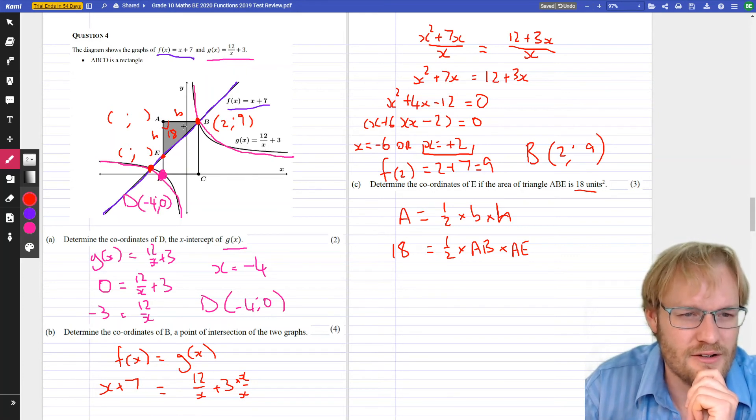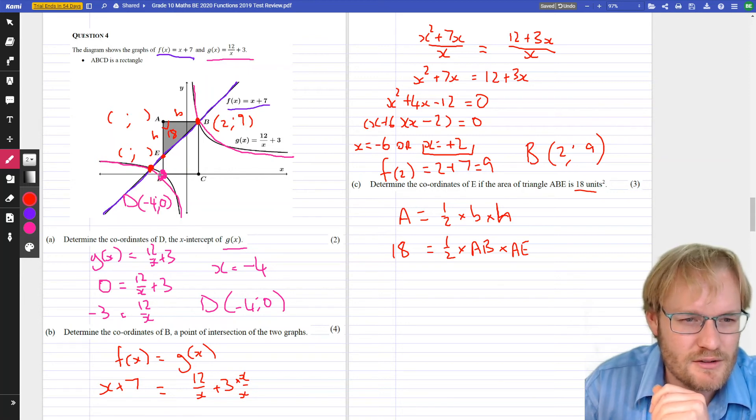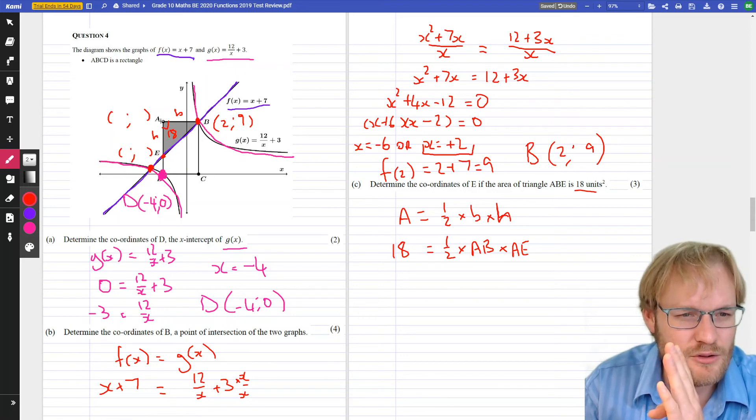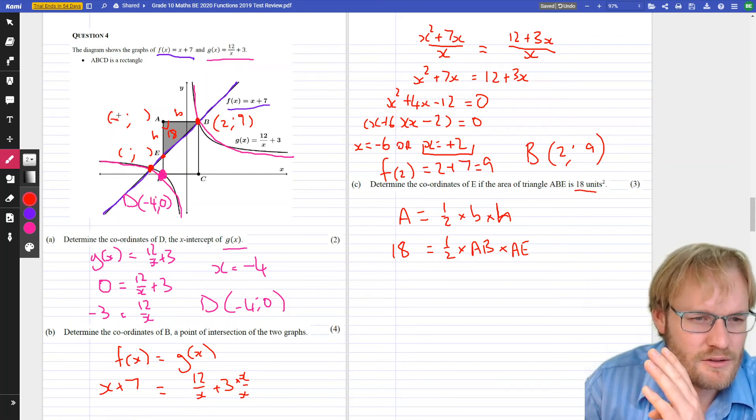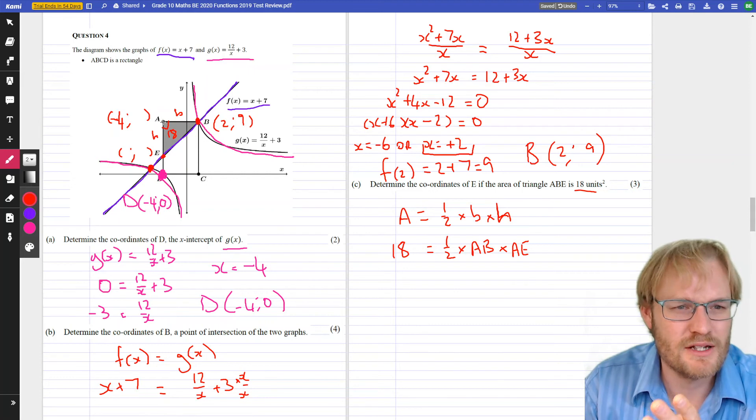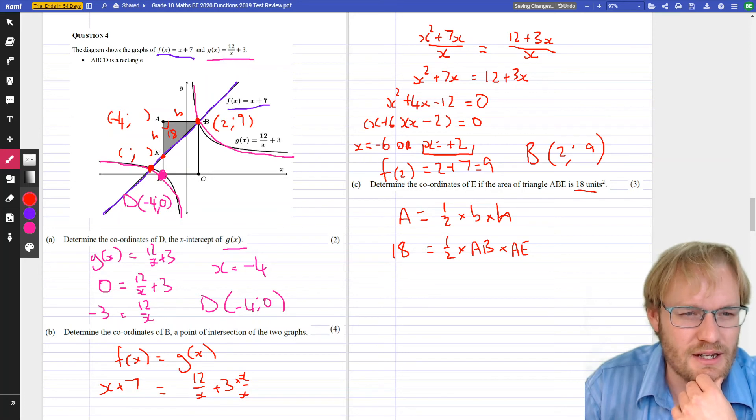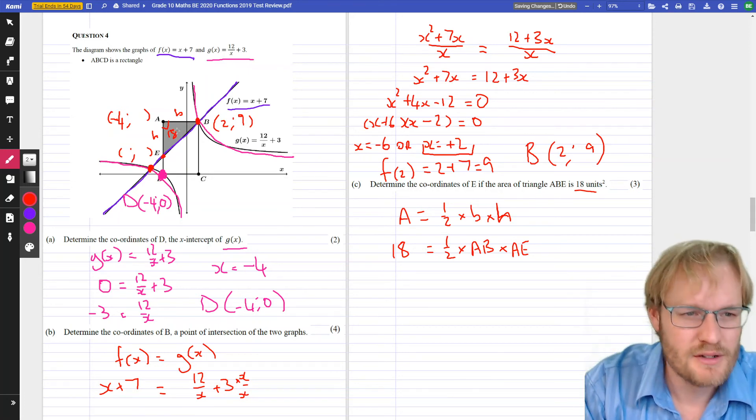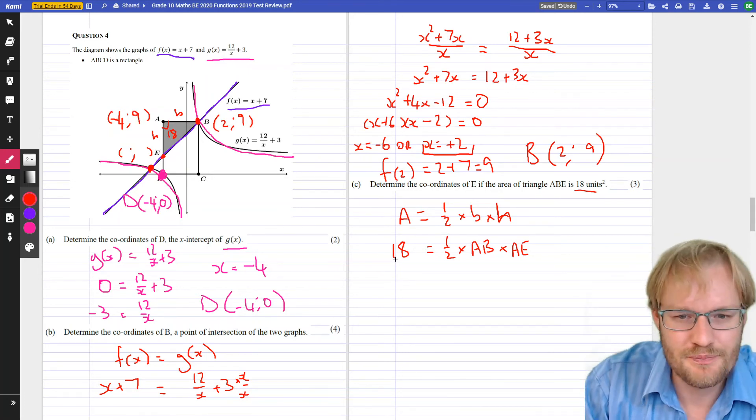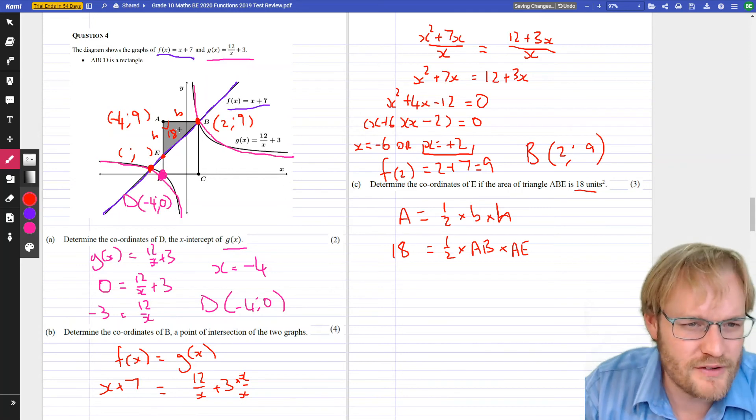D looks in line with it. So, if D's X value is negative 4, then it makes sense that this X value of A must be negative 4 as well. And if the Y value of B here is 9, so we have 9 up, then this must also be 9. So, maybe that can help us find a few things.